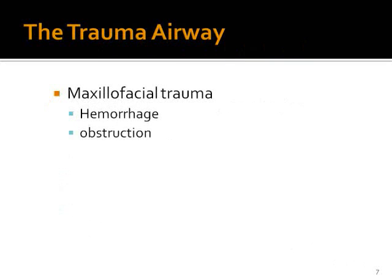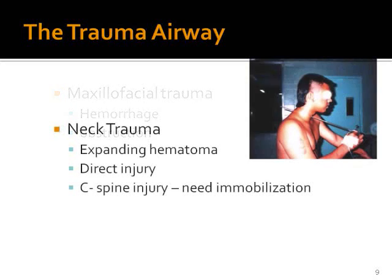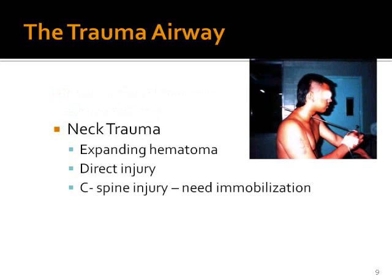The trauma airway is generally difficult because of situations where the airway could be compromised. For example, if a patient has maxillofacial trauma, there will be hemorrhage and obstruction from loose teeth or broken facial bones. Neck trauma could result in direct injury to the airway or an expanding hematoma from a carotid injury, which can compromise the airway. Cervical spine injury, which we assume in every trauma patient — such as those injured in motor vehicle crashes — requires immobilization, which complicates airway management.